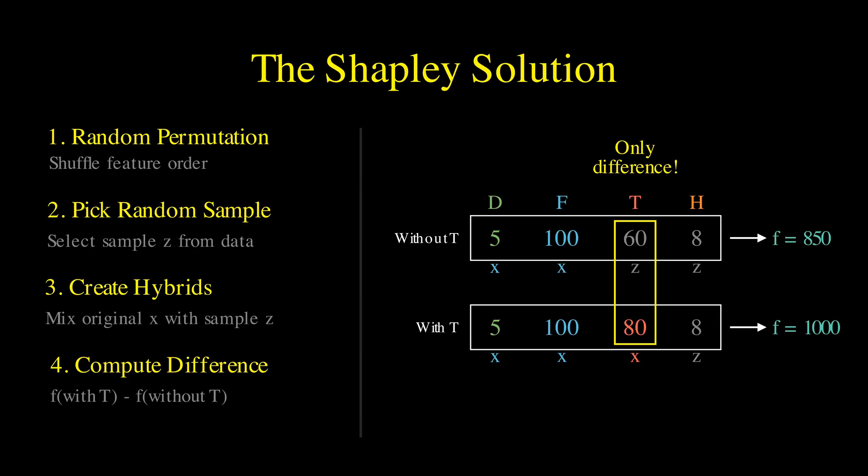We swap the random temperature value for our actual Tuesday value of 80 degrees. The model now predicts 1000 cones. Notice that the only difference between these two samples is the temperature value itself. By subtracting the first prediction from the second, 1000 minus 850, we find that the temperature feature contributed exactly plus 150 cones to the prediction in this specific scenario.